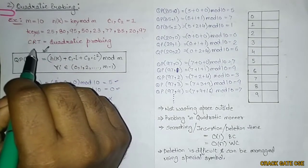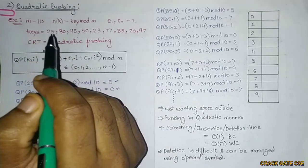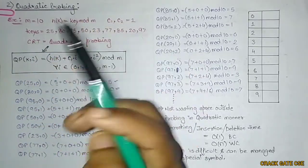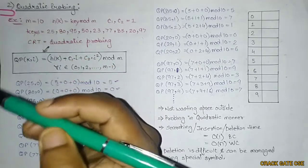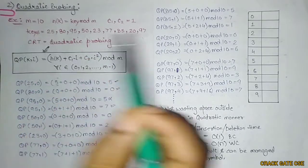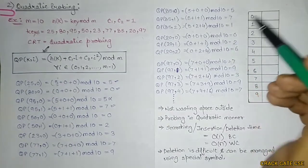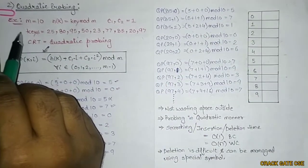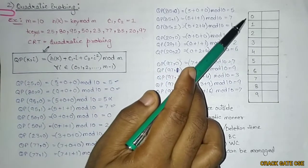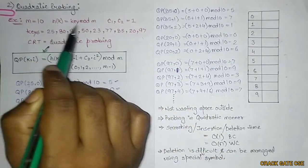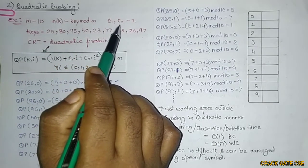Quadratic probing is an open addressing approach for collision resolution. In quadratic probing, we probe in a quadratic manner, unlike linear probing where we go one by one. Here is an example: M is given as 10, meaning the size of the hash table is 10, ranging from 0 to 9. The hash function given is H(key) = key mod M.